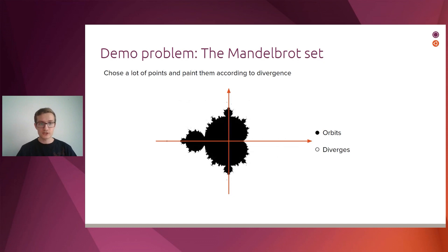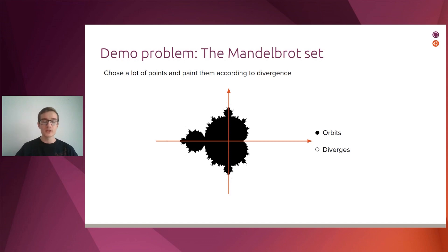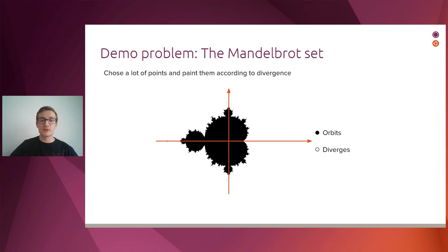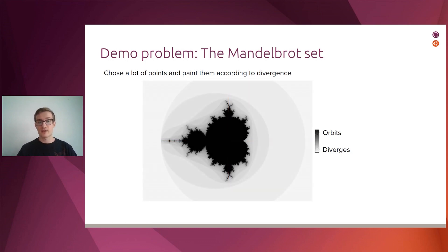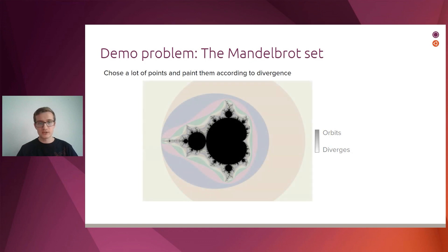With a million points, you get this image — points painted black means the iterative process never went beyond the radius of two, and white points are those that diverged. To learn more about the set, we can paint diverging points according to how many iterations it took before going off to infinity, using different shades of gray. Then, instead of a gray gradient, we pick four or five colors and alternate them — and the final drawing is the one you might recognize as typical of the Mandelbrot set.